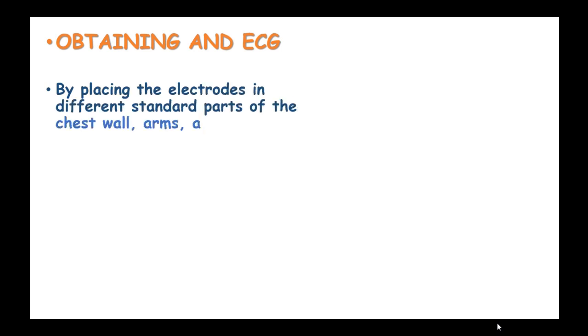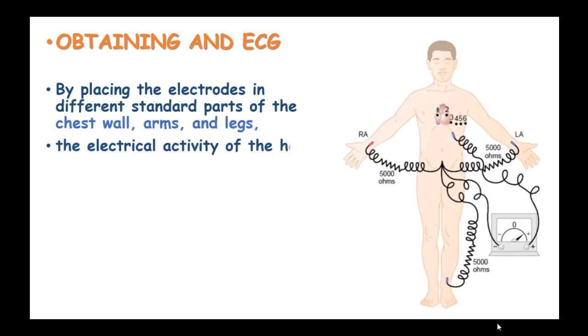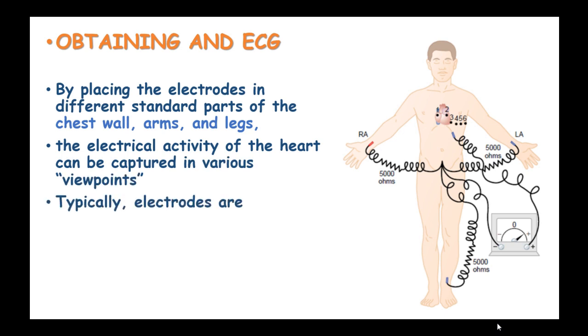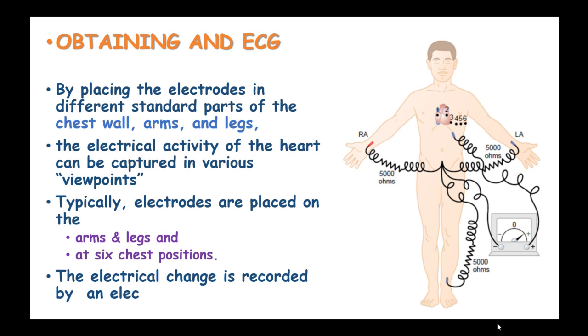How to obtain an electrocardiogram? By placing the electrodes in different standard parts of the chest wall, arms and legs, the electrical activity of the heart can be captured in various viewpoints. Typically, the electrodes are placed on the arms and legs and at six chest positions. The electrical change is then recorded by an electrocardiogram.